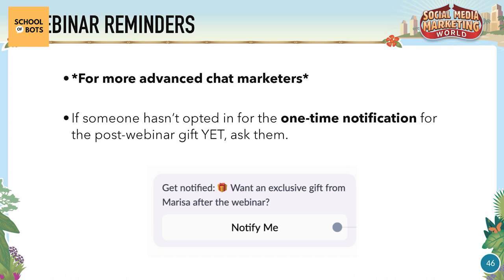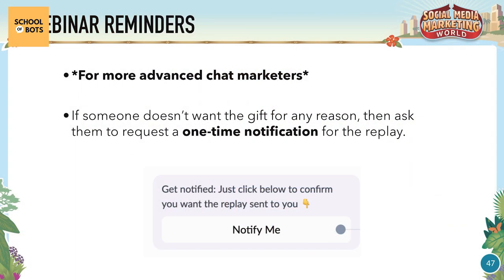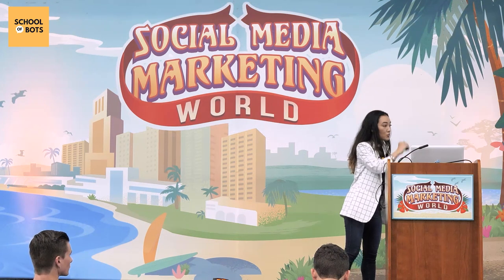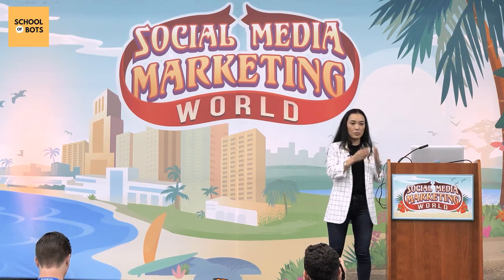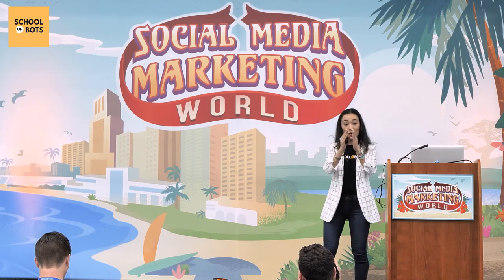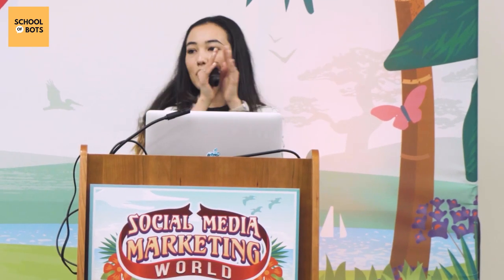For more advanced chat marketers: during the reminders, as soon as someone replies to the bot, you have another opportunity. If they haven't opted in for a one-time notification about a post-webinar gift, ask them then. If they don't want the gift, ask if they want a one-time notification for the replay instead. You can theoretically have unlimited notifications active per user at any time, but each must be for a distinct topic — one for the replay, one for the post-webinar gift, and so on.